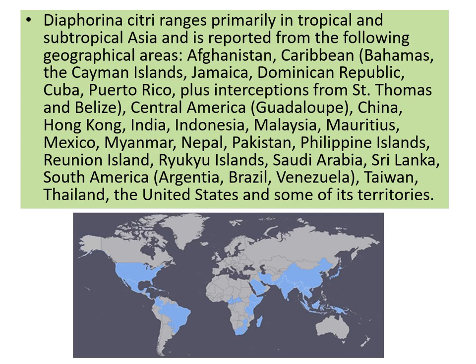Diapherina citri ranges primarily in tropical and subtropical Asia and is reported from the following geographical areas: Afghanistan, Caribbean, Jamaica, Dominican Republic, Cuba, Central America, China, Hong Kong, India, Indonesia, Malaysia, Mauritius, Myanmar, Pakistan, Philippines, Saudi Arabia, Sri Lanka, South America including Brazil and Venezuela, Taiwan, Thailand, and the United States.